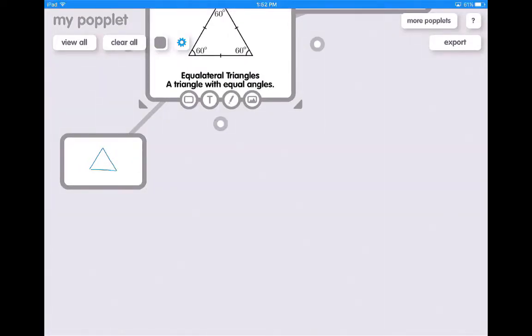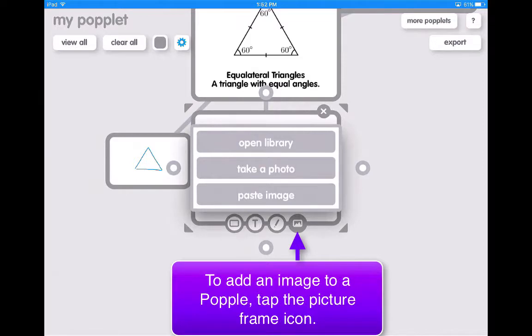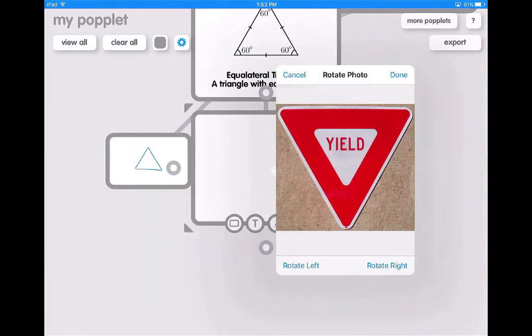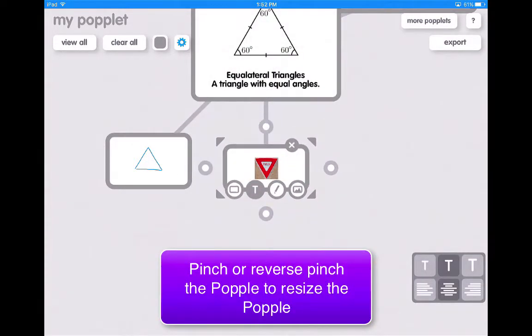Say maybe I want to add a real life example of where equilateral triangles are used. I then can create another bubble, and I'm going to add another photo.